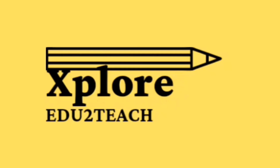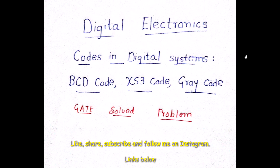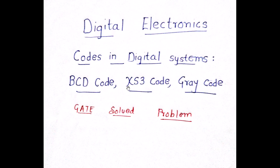Welcome to Explore EduToTeam. The next topic in digital electronics is codes in digital systems, where we'll be talking about the BCD code, the XS3 code, and the Gray code. A GATE problem will also be solved on it, so you need to understand this concept very well.